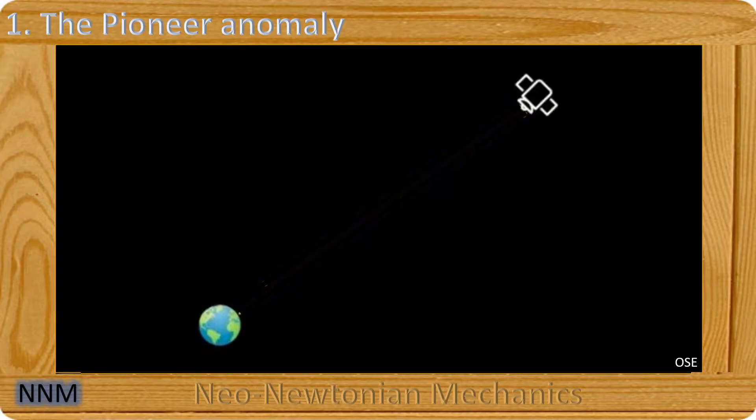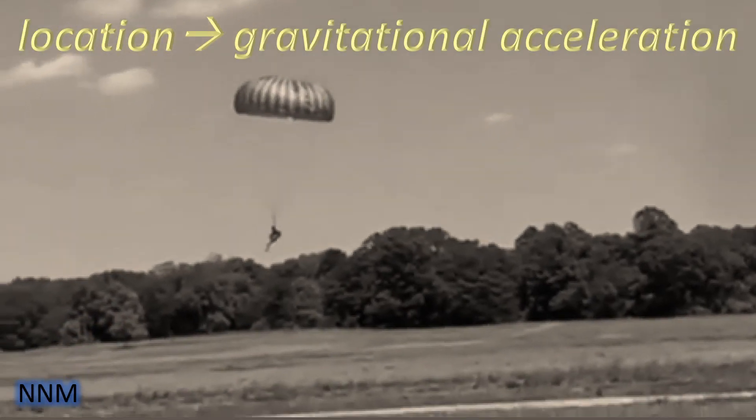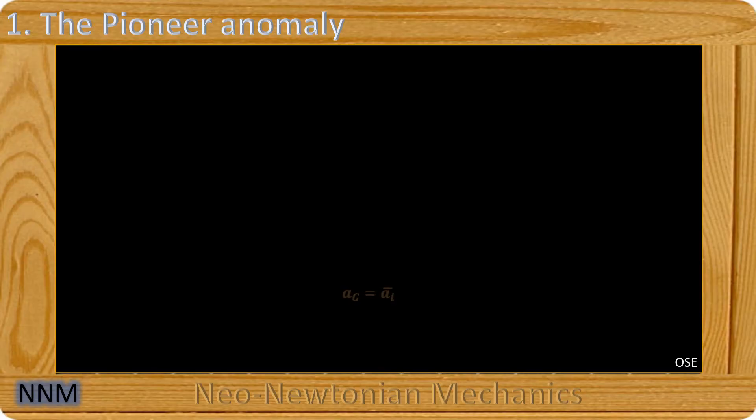Moreover, by sending from the earth in the direction of the probe an electromagnetic wave which is re-emitted at another frequency by the probe towards the earth, and knowing that this electromagnetic wave moves at the speed of light c, we thus know how far away the probe is at a given time. We can then calculate the gravitational attraction AG of the sun and the other planets on this probe.